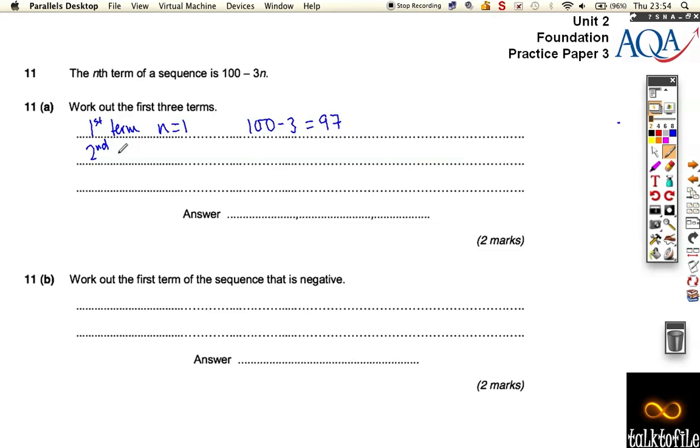To work out the second term, we do n equals 2. So we're going to do 100 minus, well, 3 times 2 is 6. So 100 minus 6, which is 94.